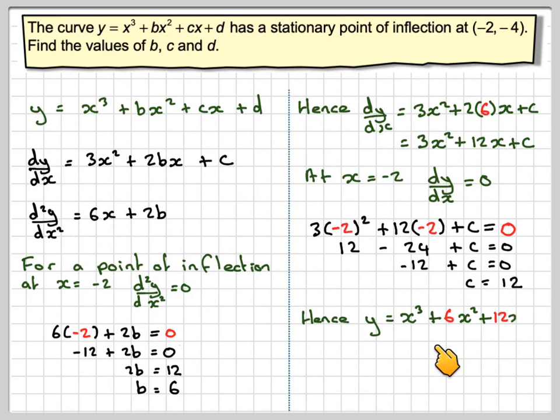So if we now put our values of b and c into y, we get x cubed plus 6x squared plus 12x plus d. We know the curve passes through minus 2, minus 4. Therefore, when x is minus 2, y must be minus 4. So minus 4 equals minus 2 cubed plus 6 times minus 2 squared plus 12 times minus 2 plus d.